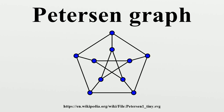Any ten-vertex Hamiltonian 3-regular graph consists of a ten-vertex cycle C plus five chords. If any chord connects two vertices at distance two or three along C, the graph has a 3-cycle or 4-cycle, and therefore cannot be the Petersen graph. If two chords connect opposite vertices of C to vertices at distance four along C, there is again a 4-cycle. The only remaining case is a Möbius ladder formed by connecting each pair of opposite vertices by a chord, which again has a 4-cycle. Since the Petersen graph has girth five, it cannot be formed in this way and has no Hamiltonian cycle.